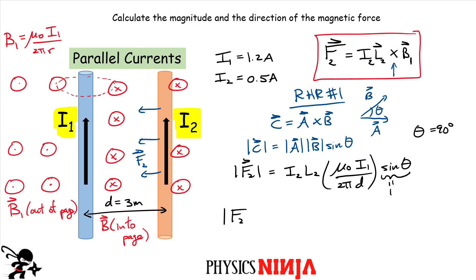The magnitude of force F2 simplifies to: F2 = (μ₀ / 2π) · I1 · I2 · L2 / D. You can see it depends on the length of the current, both current values, and the distance between the two wires — the greater the distance, the smaller the force. The sine of theta term drops out since it equals one.